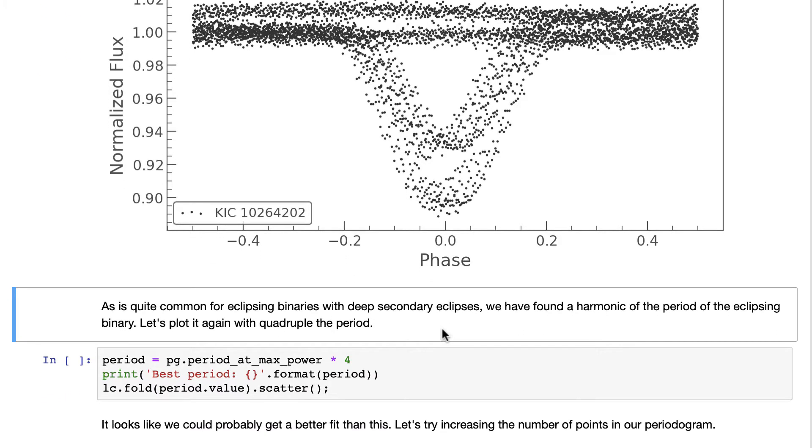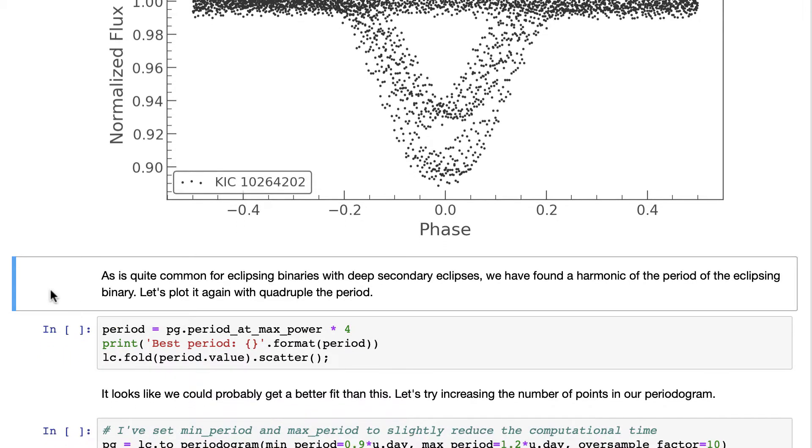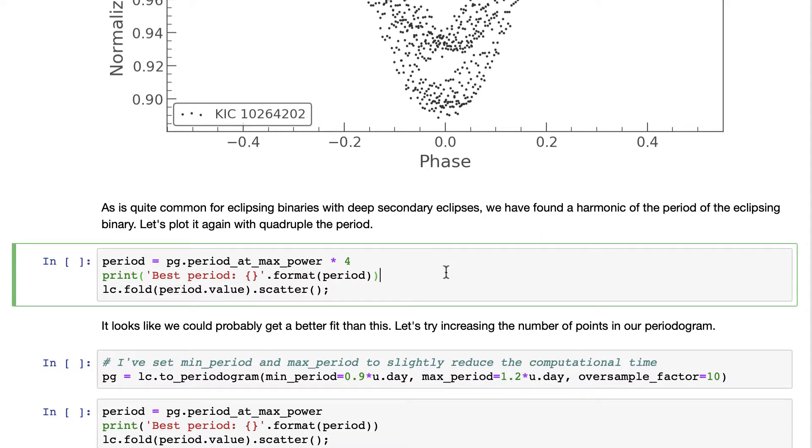But we see this funny overlaying of the folded light curve at that period. It's quite common for eclipsing binaries with deep secondary eclipses, and so we found a harmonic of the period and not the exact one.